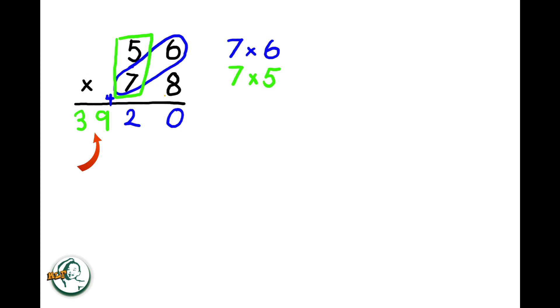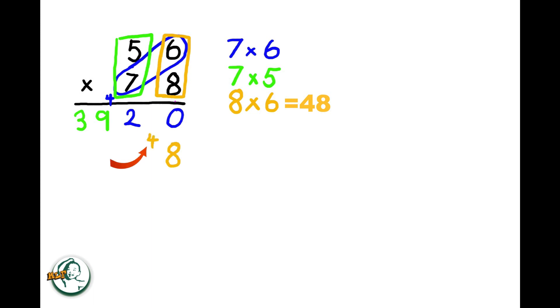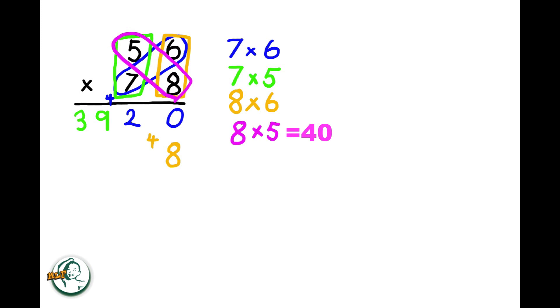Moving on to the other number, 8 multiplied by 6 equals 48. We write down the 8 and carry over the 4. And 8 multiplied by 5 is 40. Adding the carried over 4 to 40, we get 44.